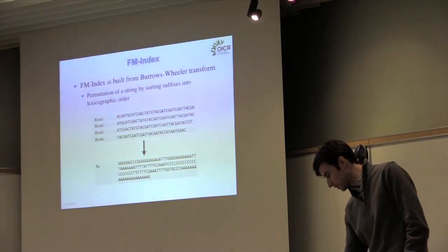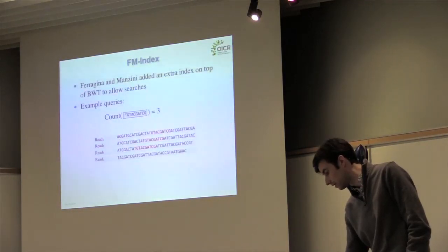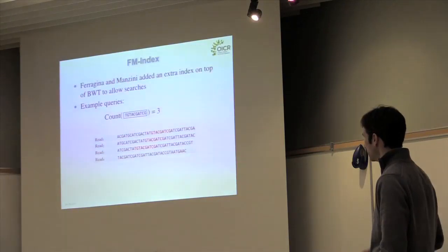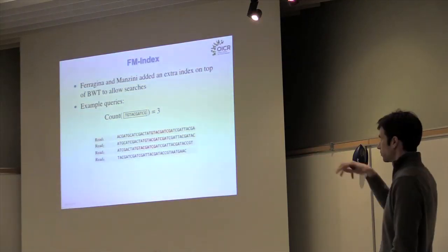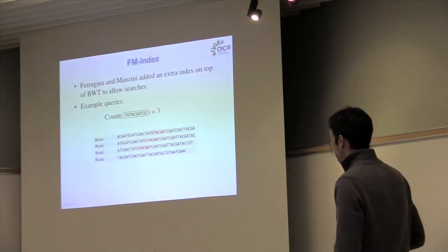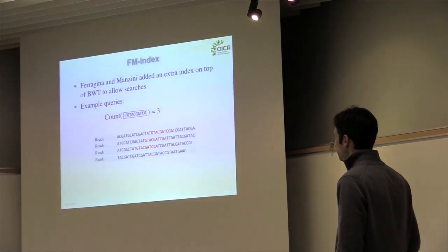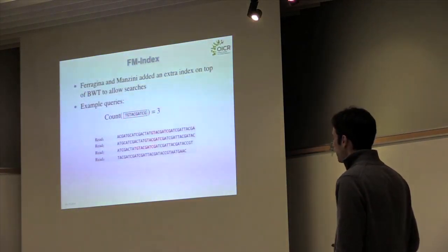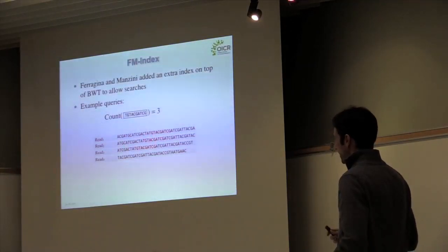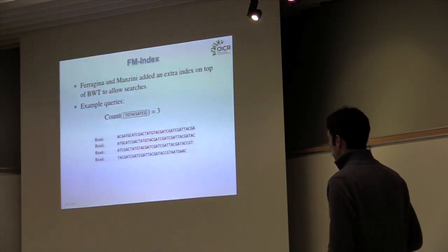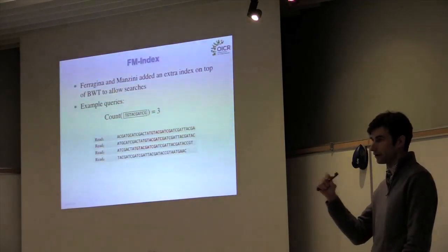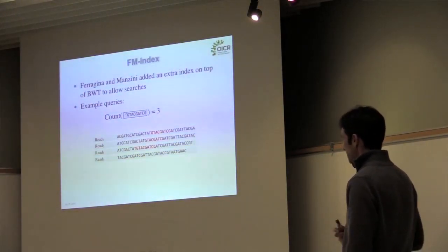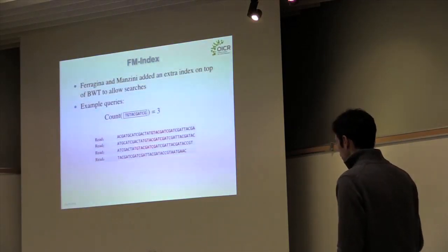What you do is you take your sequence data and you permute it by sorting every base according to the suffix that it belongs to, and you get a string that looks like this. This string, because you end up with runs of repeated characters, is much easier to compress than your original data. This is what Burrows and Wheeler were interested in when they designed this algorithm. But as it turns out, you're able to actually search that representation of the data as well. This was observed by two computer scientists, Ferragina and Manzini, in Italy. What they did is they added an extra index on top of the Burrows-Wheeler transform to allow you to search. An example of how you can search the Burrows-Wheeler transform using the FM index is you might have a function called count where you have just some arbitrary pattern, and it will tell you the number of times that string appears in your sequence data by directly searching the compressed representation of the text. The running time of these count queries is linear in the length of the pattern rather than the number of occurrences, so it's an excellent way of searching very large pieces of text like genome data or sequence reads.